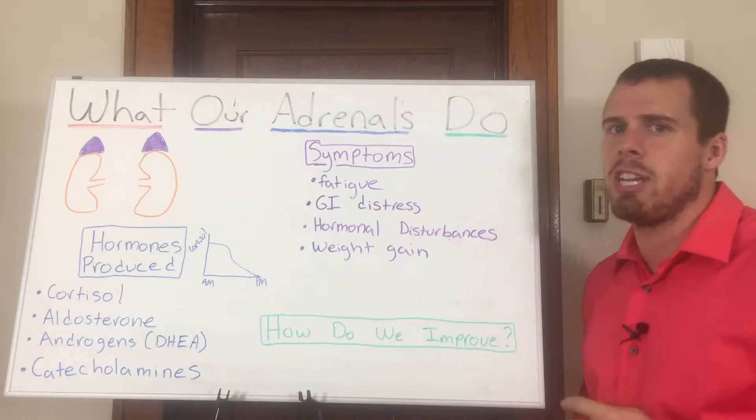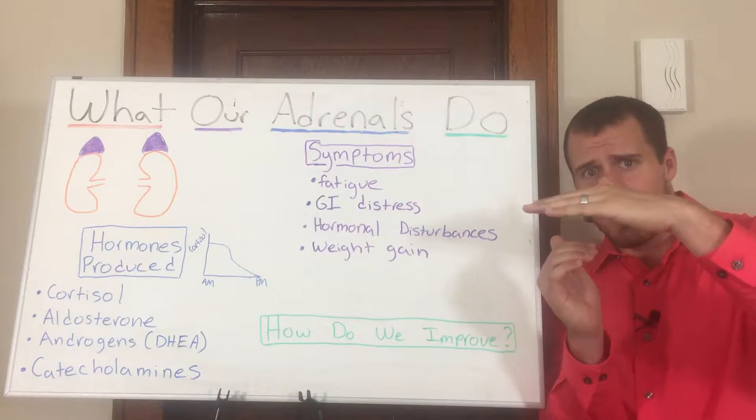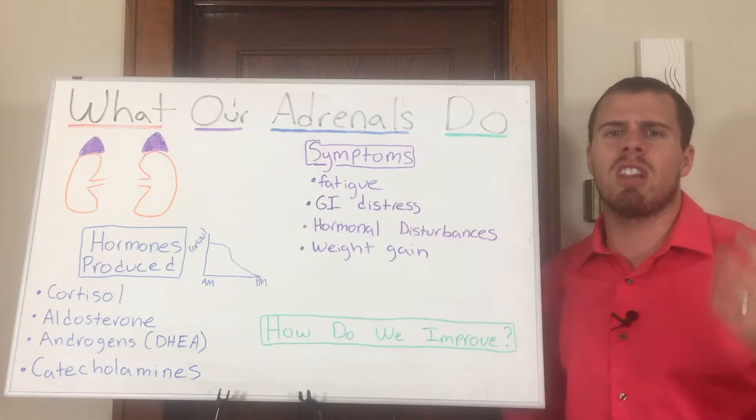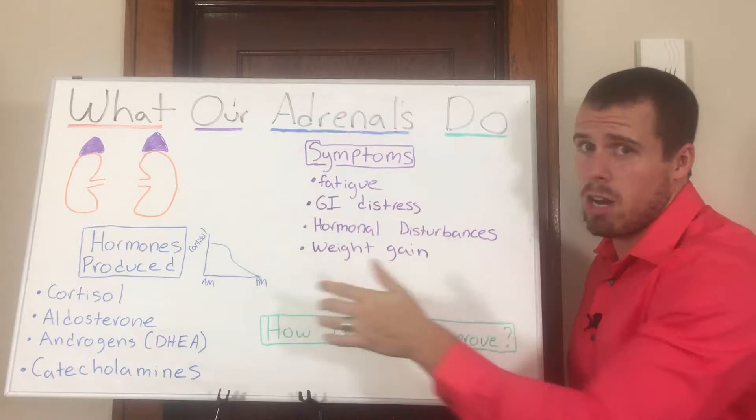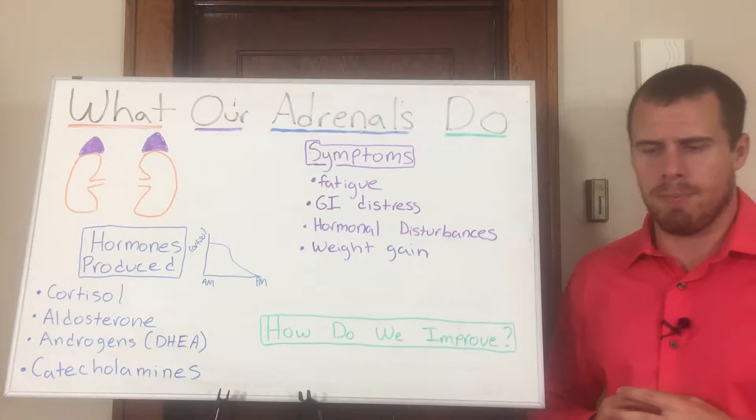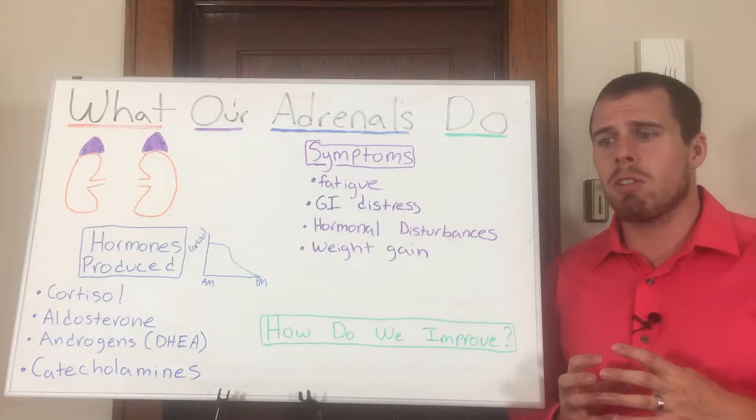The zona reticulata is going to release our androgens — these are our build-up hormones and our repair hormones. Mainly the big one is DHEA, dihydroicosanoic acid. Now we move into the next portion of that adrenal gland, which is the adrenal medulla, the middle layer. This is going to release our catecholamines — our epinephrine and norepinephrine. The real big issue that we're going to see is fatigue associated with these hormones.